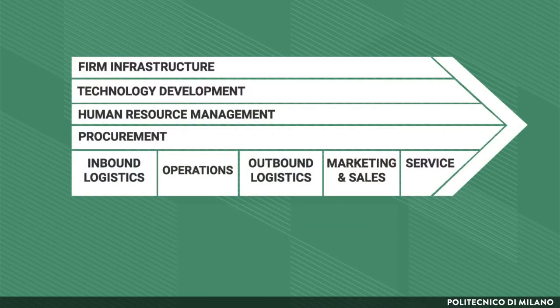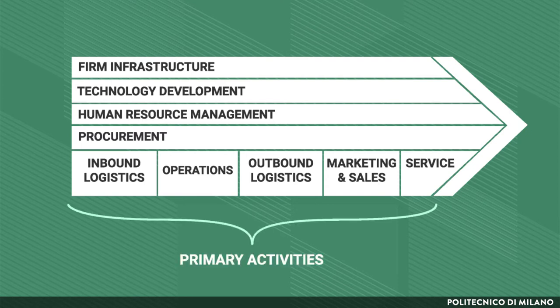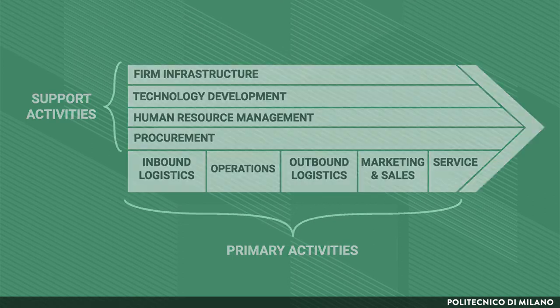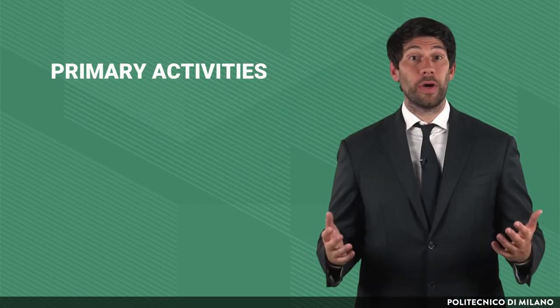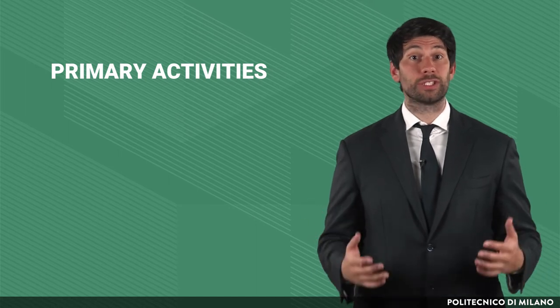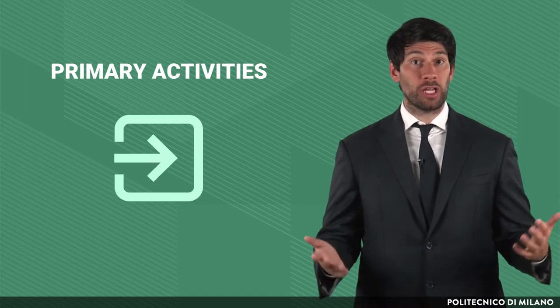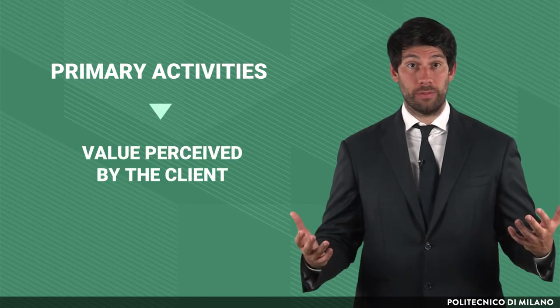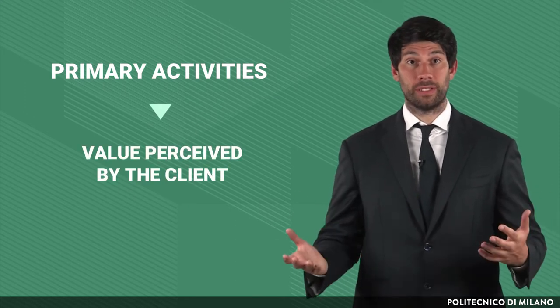The original value chain model developed by Porter for manufacturing companies is shown in this figure. The value chain is made up of five basic activities called primary activities, and of four cross-cutting activities called support activities. Primary activities are those directly contributing to the transformation of inputs into outputs and to the creation of value perceived by the client.